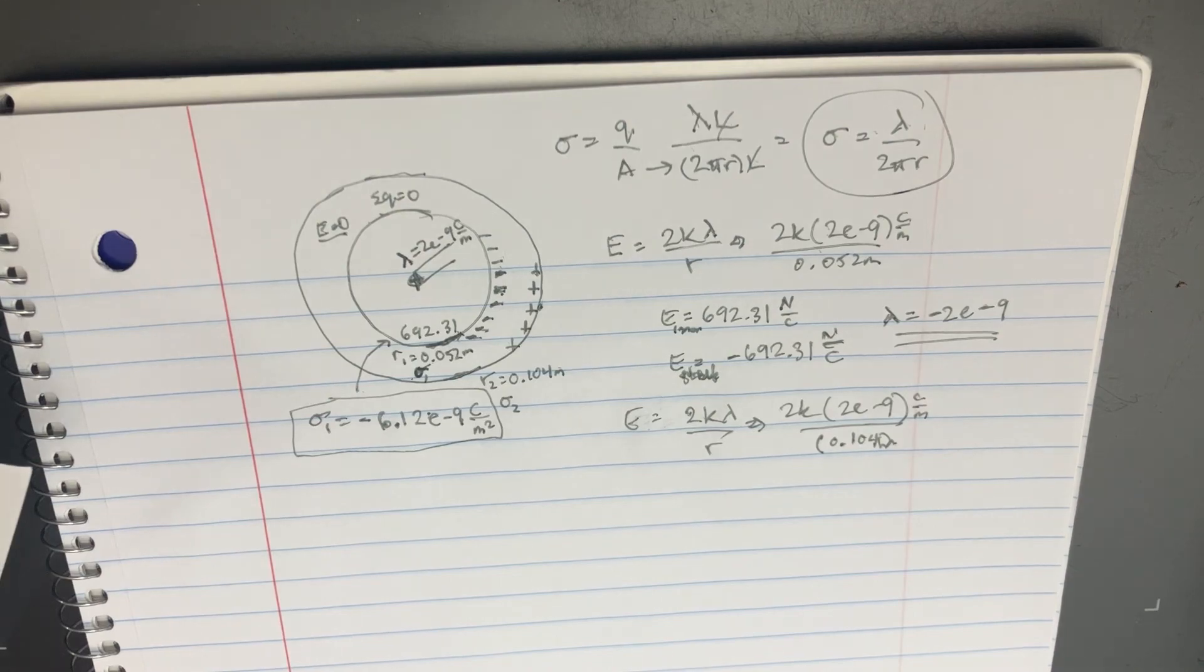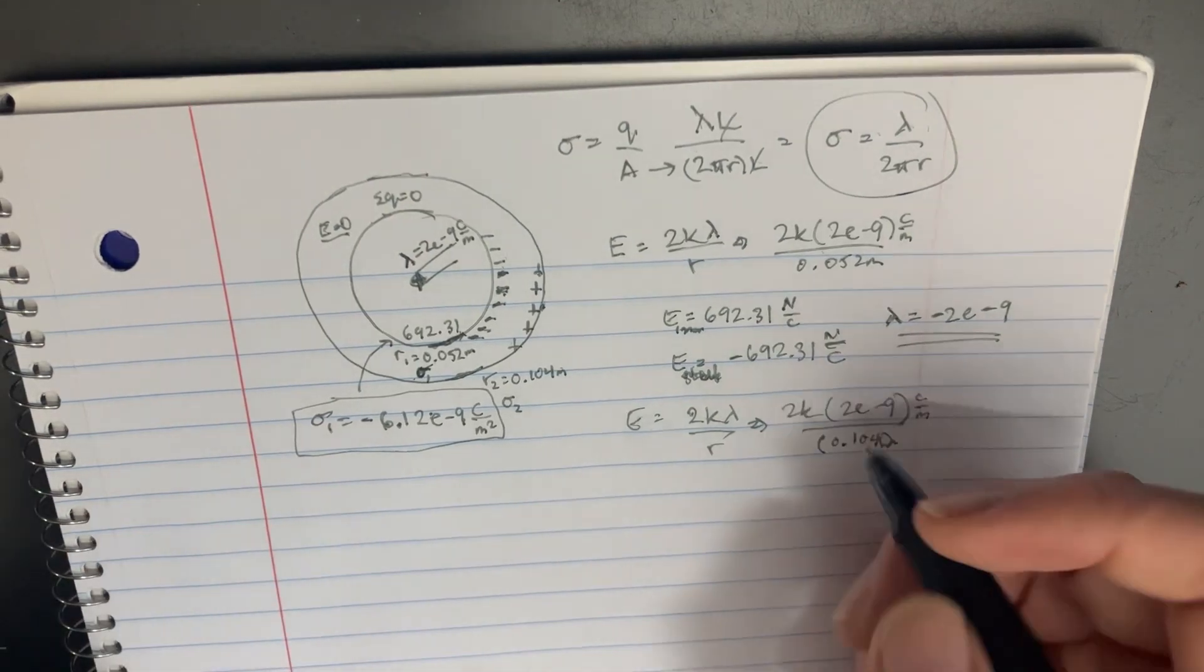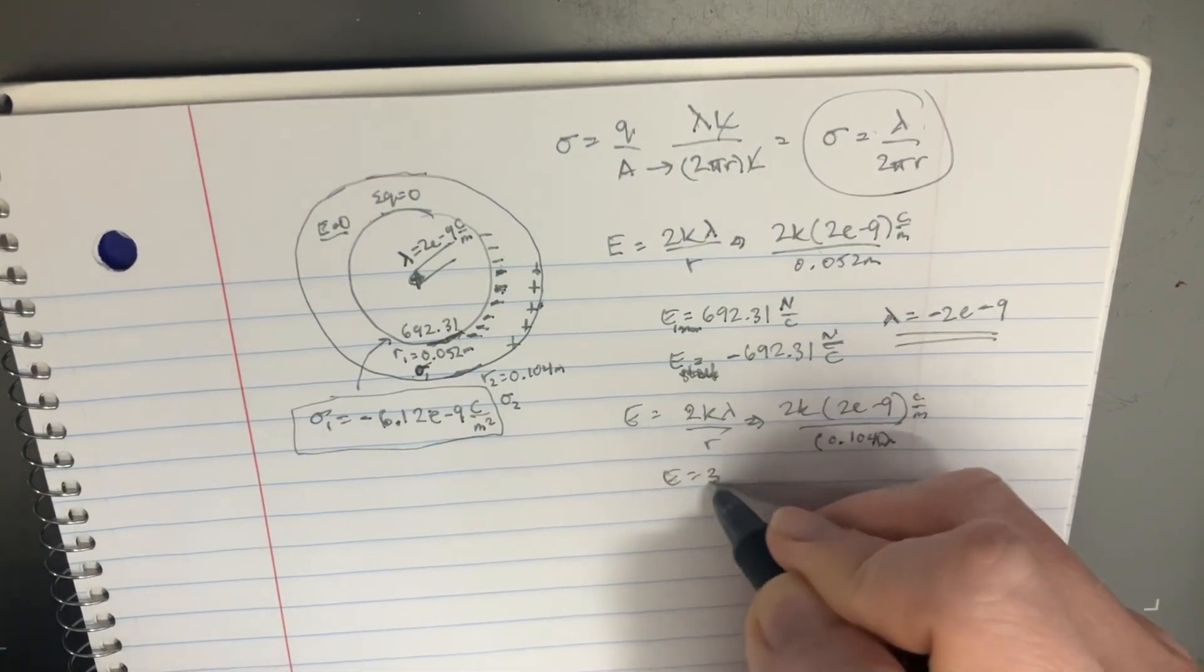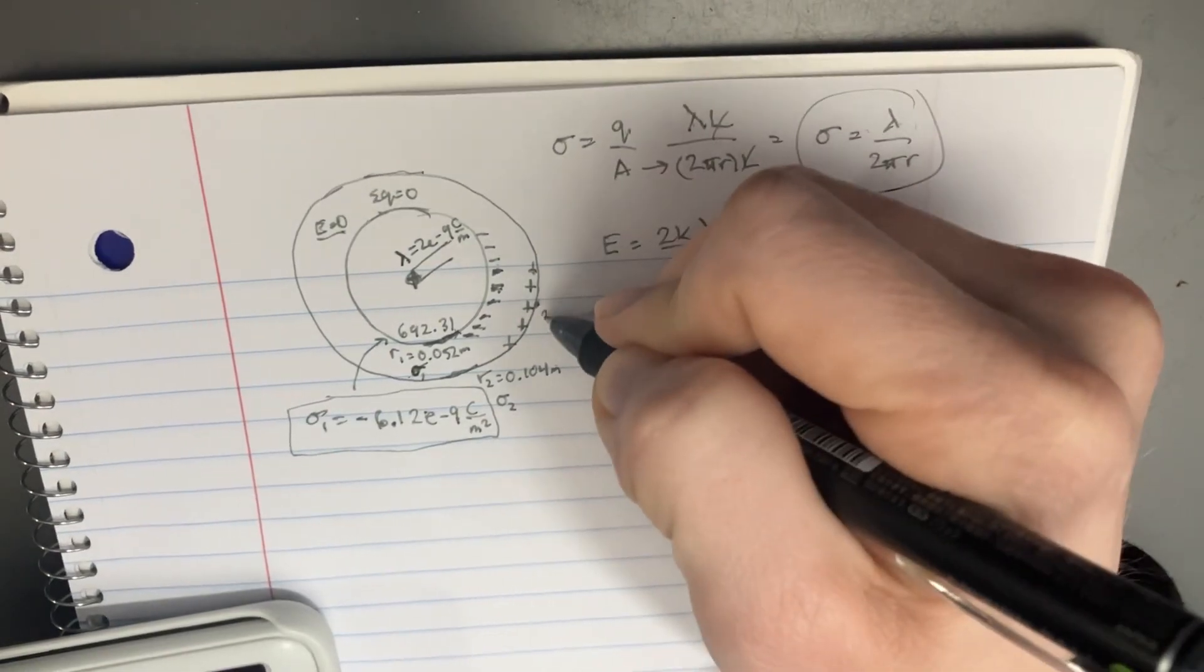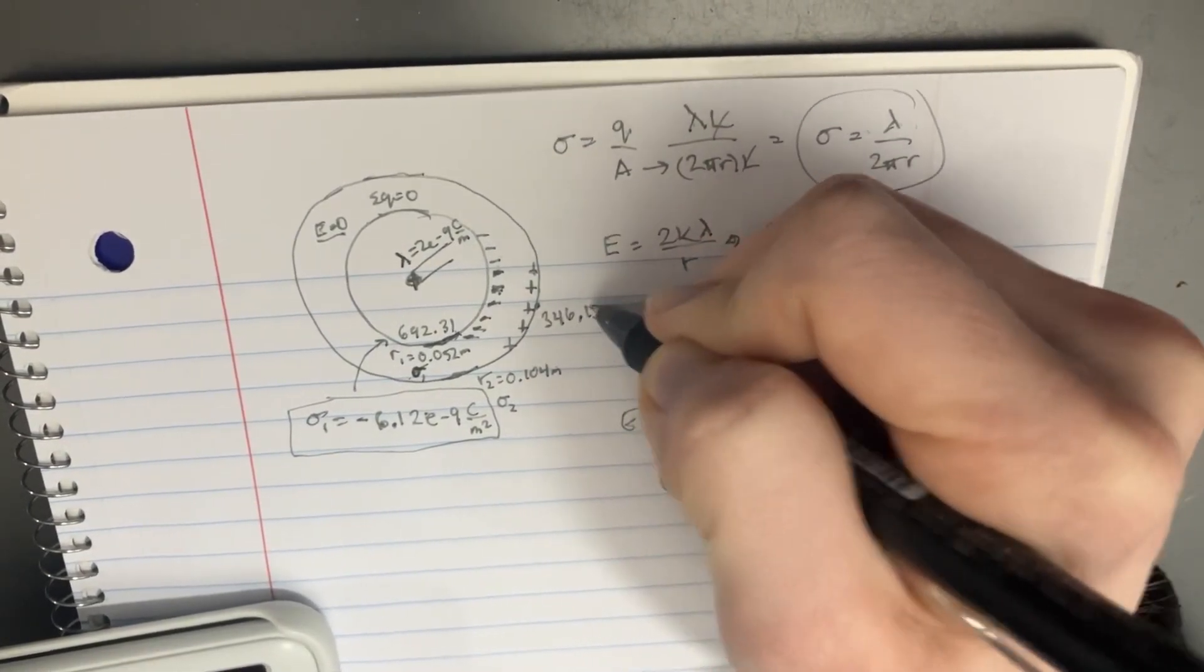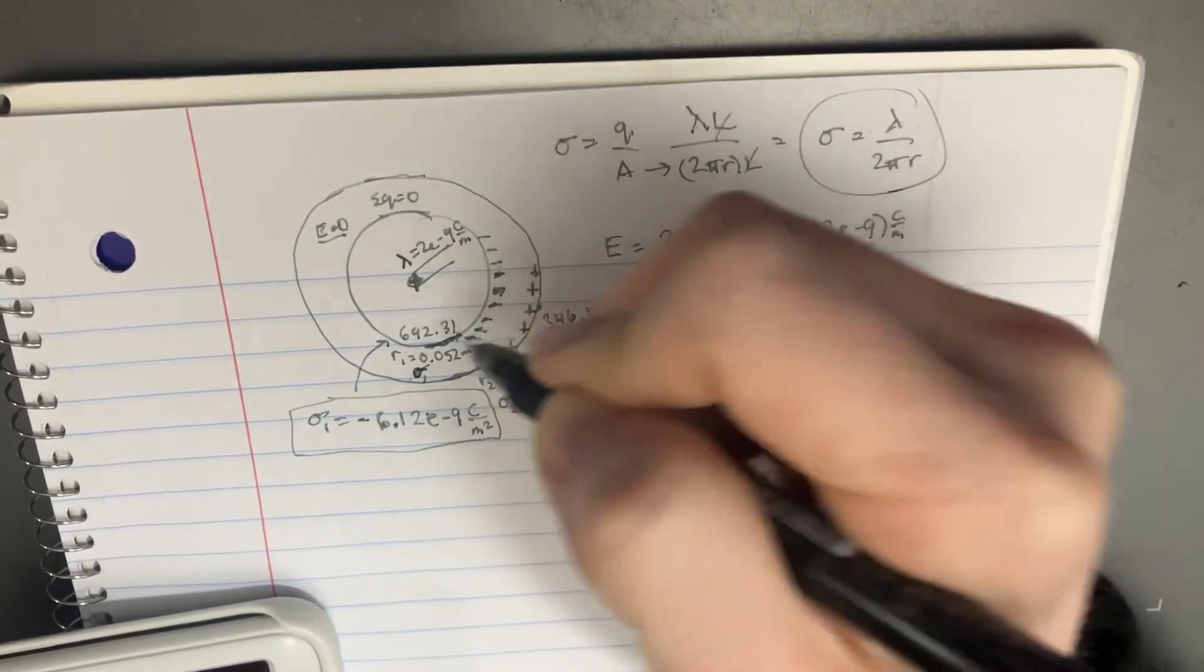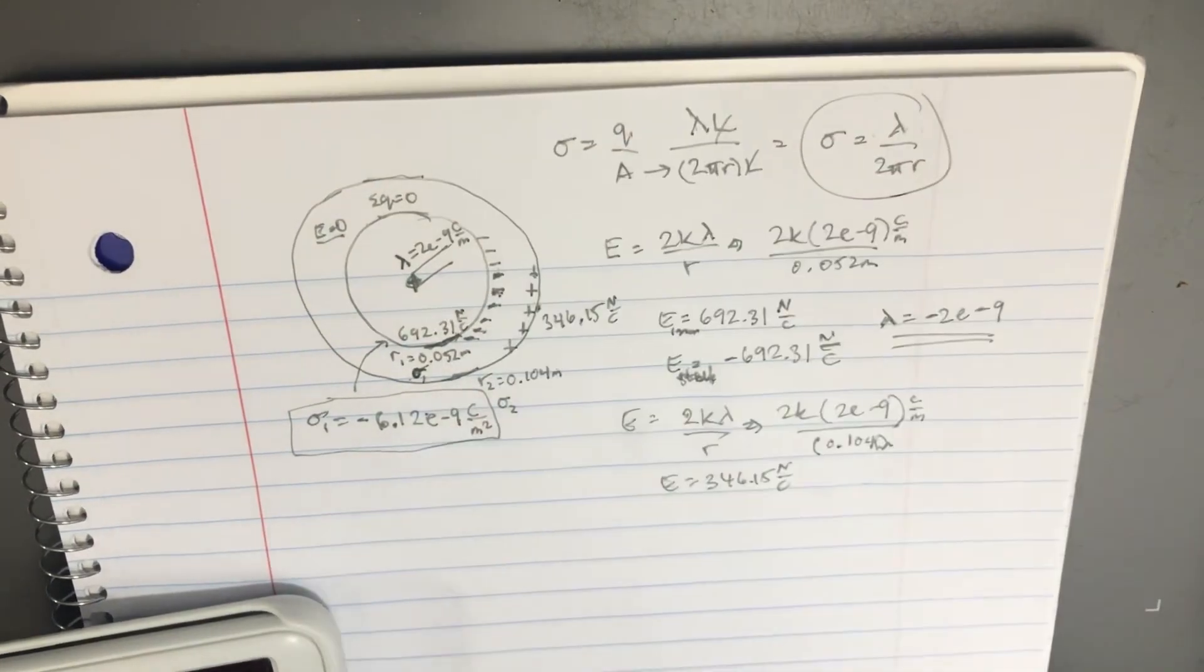346.15. So this particular region, we would have 346.15 newtons over coulombs. Okay. This is going to make sense. And if we undo this and try to figure out what the linear density is, again, it's just going to be negative 2 E to the negative 9.